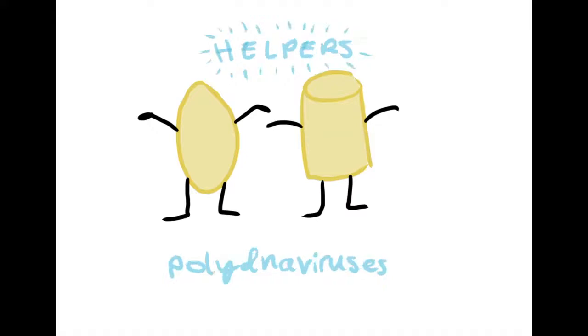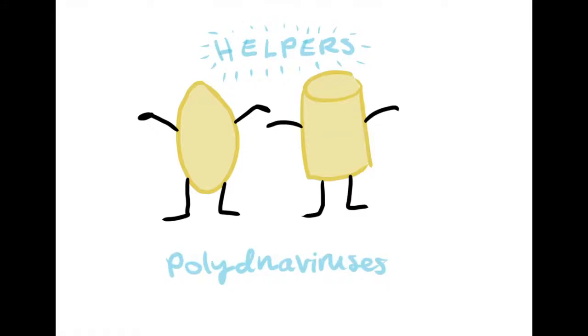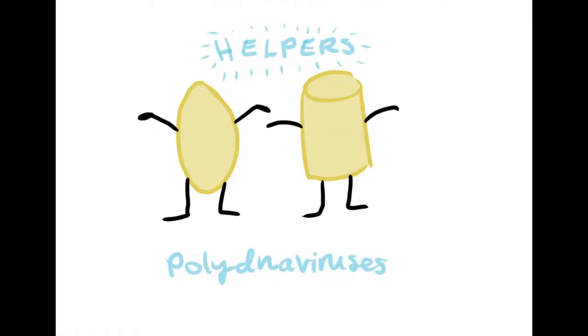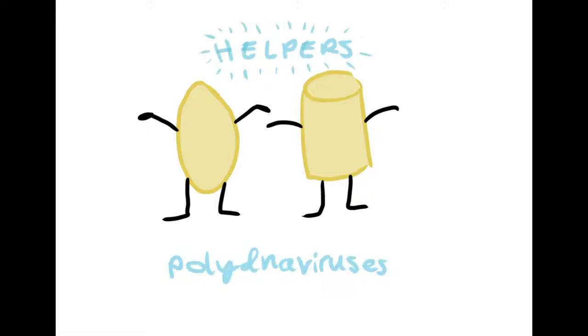The polydnavirus is integrated into the wasp's genome, and it is transmitted vertically. This means that it is transmitted from parent to offspring.